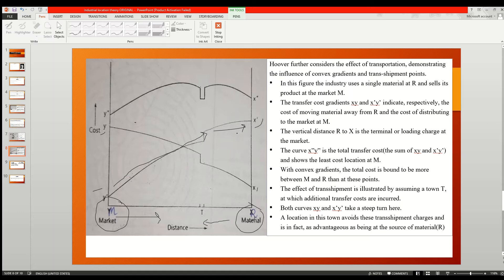X dot and Y dot indicates that the total of transport cost and the cost of distributing. Simply, X dot Y dot is the sum of these costs.